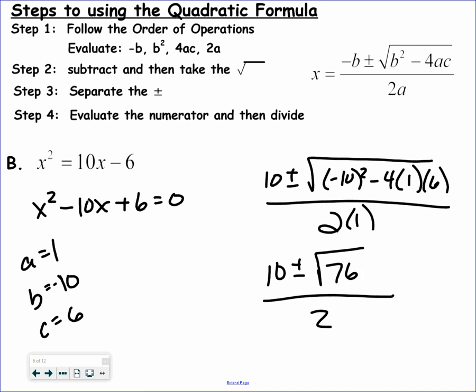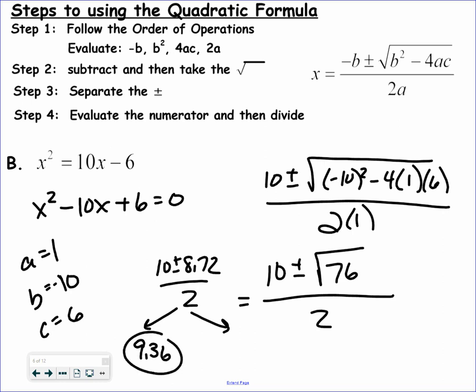Here's where things get a little more complicated. The square root of 76 is not an integer — it's a decimal, 8.72. So I get 10 plus or minus 8.72, divided by 2. I still have to do two problems: 10 plus 8.72 divided by 2 gives 9.36, and 10 minus 8.72 divided by 2 gives 0.64. This is not factorable — so if it wasn't factorable, what would I do? I can't factor it, I can't use the square root property, so I use the quadratic formula because I know A, B, and C. The quadratic formula is the go-to move if I can't use the square root property and can't factor.